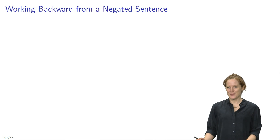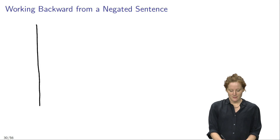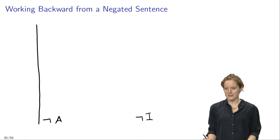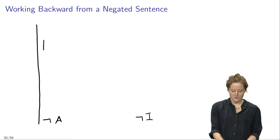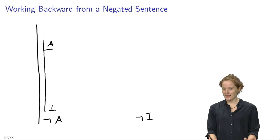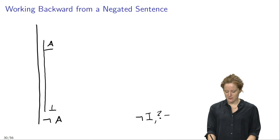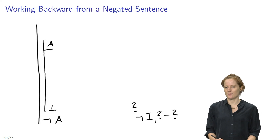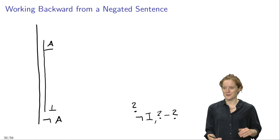What does backward planning suggest when I want to prove a negated sentence? Suppose I want to prove 'not A'. Backward planning suggests that I should use negation introduction. Negation introduction also requires a sub-proof that starts with the assumption that A and ends with a contradiction. If I manage to construct such a sub-proof, then I can justify the inference to 'not A' by citing negation introduction, and I'll put a question mark behind the bottom sign since I have not yet established bottom.